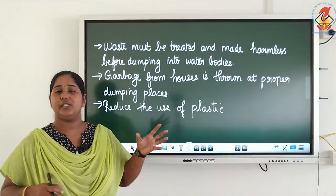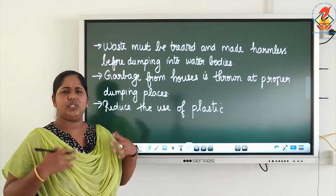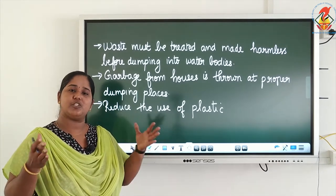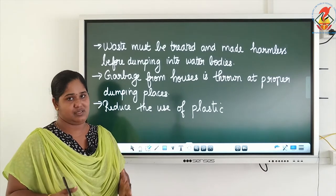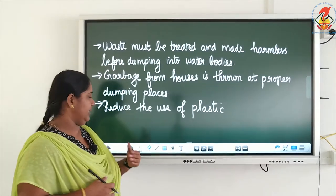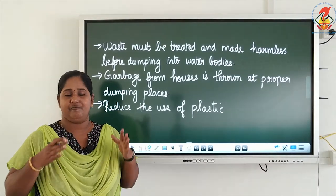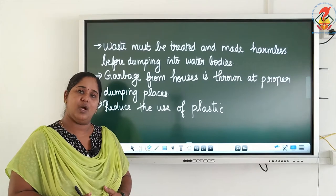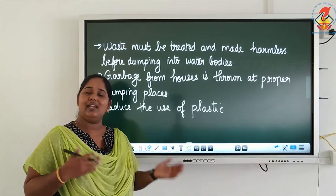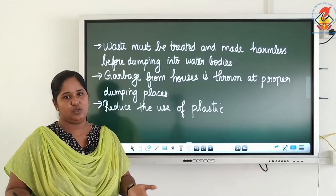Waste that is dumped into water bodies affects the water animals living there. Garbage from houses should be thrown in proper places — don't throw garbage everywhere causing land pollution. There should be a proper waste management system so that each type of waste can be disposed of separately. We must also reduce the use of plastic, which is a very big problem we are facing now.